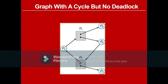P1 is holding one instance of R2 and is requesting one instance of R1. P2 is holding one instance of R1. P3 is holding one instance of R1 and wants one instance of R2. P4 is also holding one instance of R2. P2 and P4 are only holding one resource each and not requesting any other resource. So P4 will finish its work, release the resource, and that instance of R2 will be taken by P3.